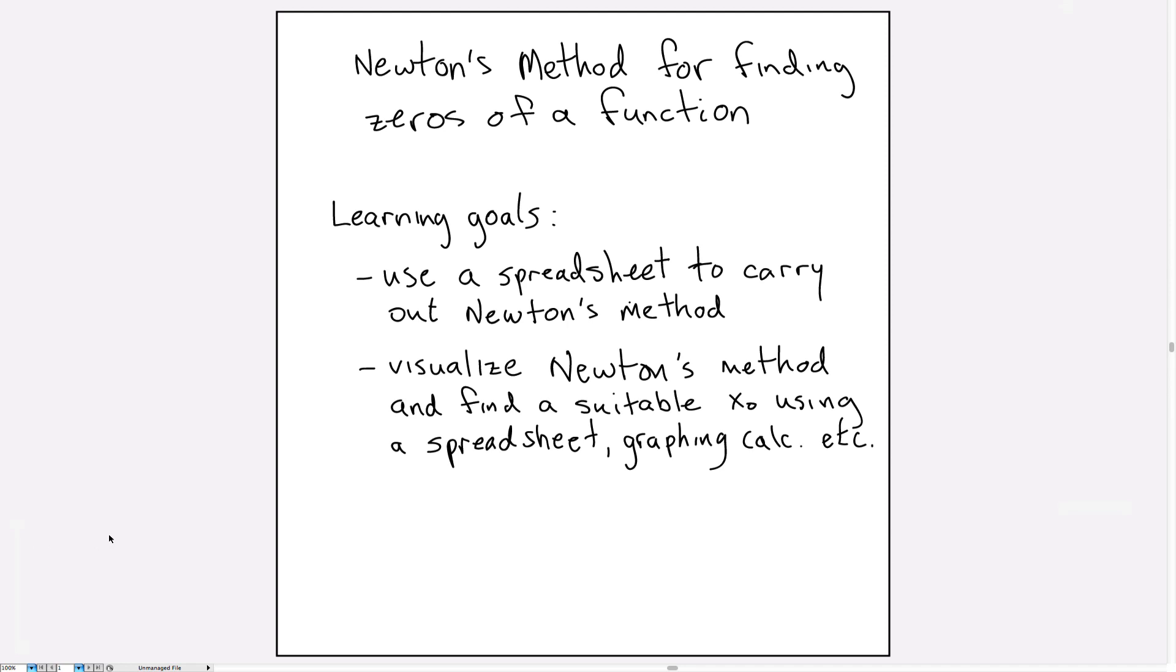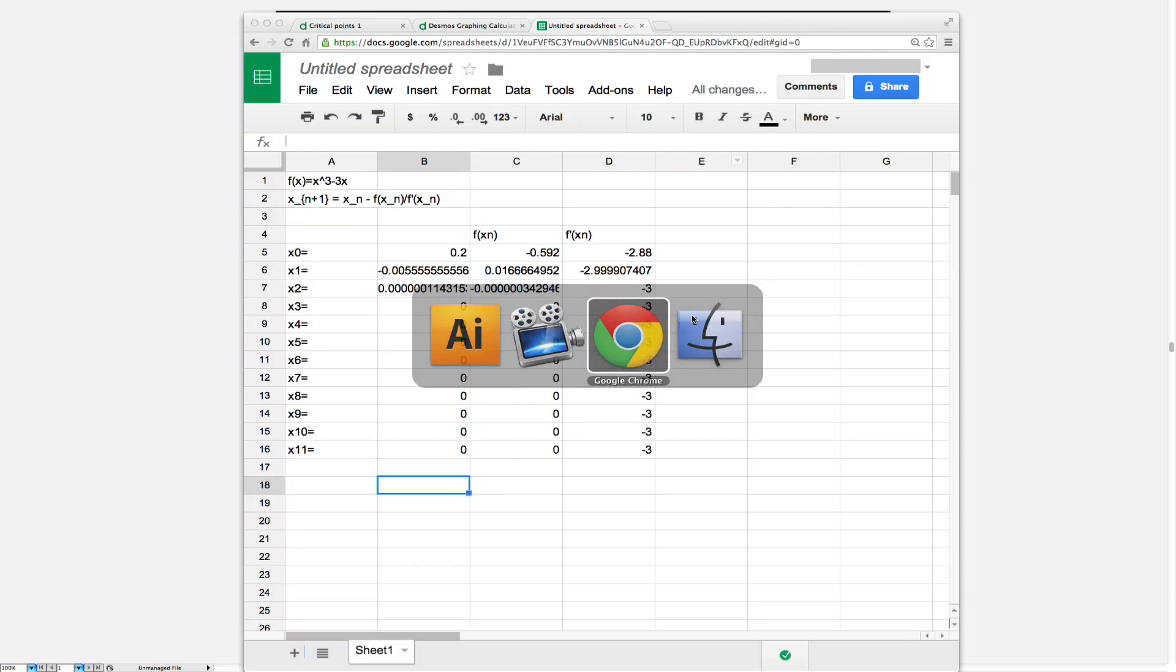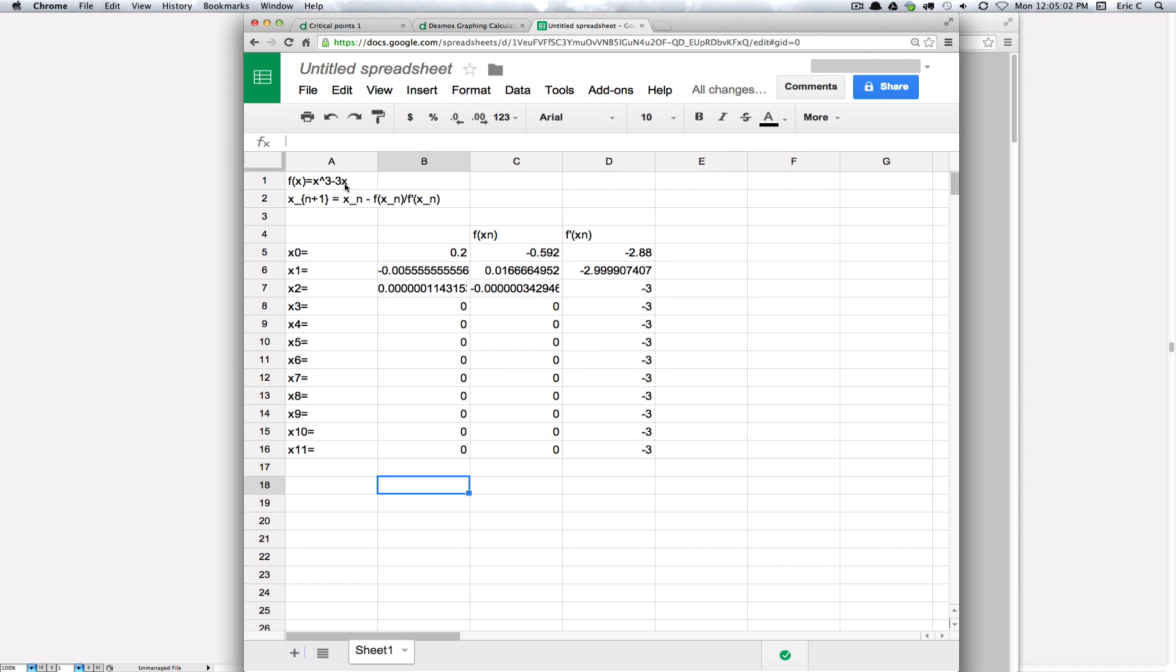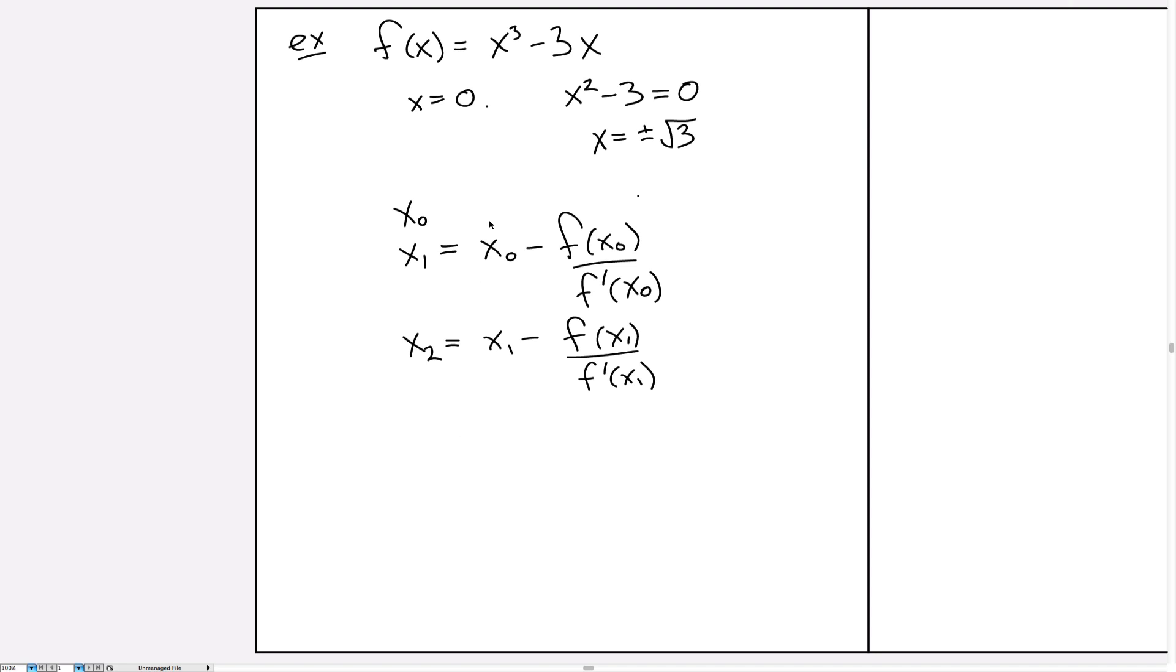In the previous video, we used Google Sheets to implement Newton's method to find the roots of the function x³ - 3x. We found that starting with x₀ = 0.2, we converged to the root x = 0, which we already knew, and that's not the one we want.